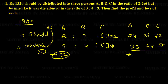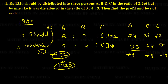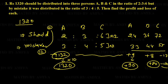A should get 24 but is getting 33, so A is in profit of Rs. 9. B should get 36 but is getting 44, so B is in profit of Rs. 8. Since total profit and loss must be zero for distribution within a group, C is in loss of Rs. 17. This is all for a total sum of 132.